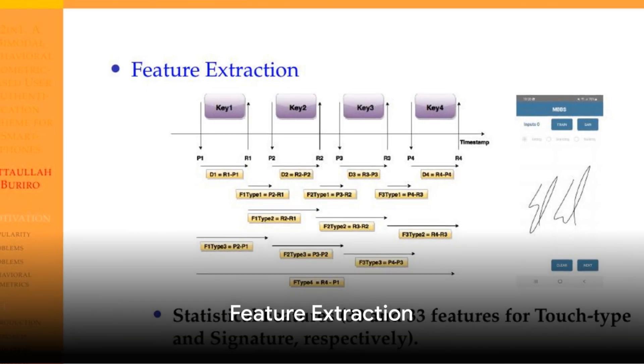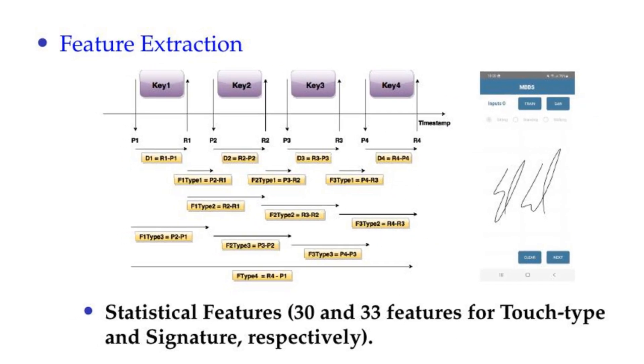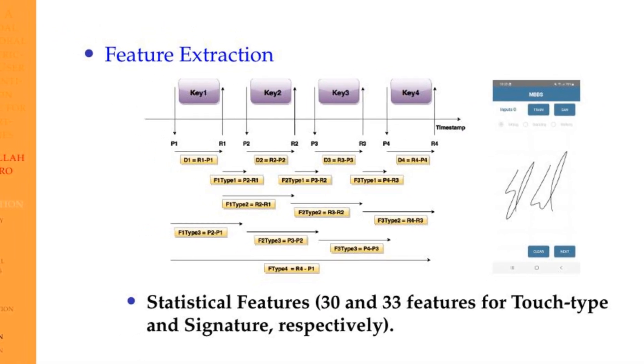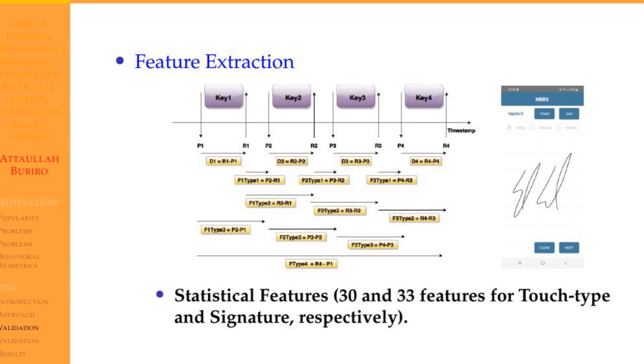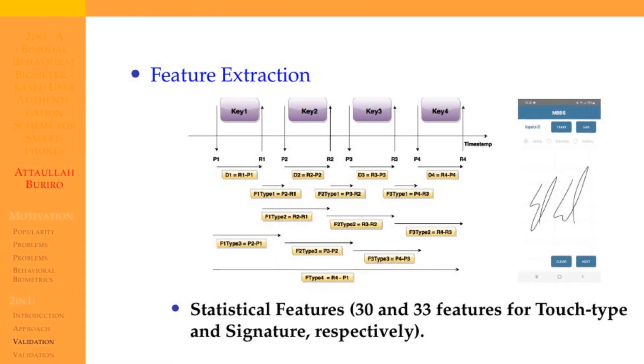We extracted statistical features from both touch type and signature data. Specifically, we obtained 30 timing-based features for touch type and 33 movement-based features for signature input. These features play a crucial role in our robust authentication approach.